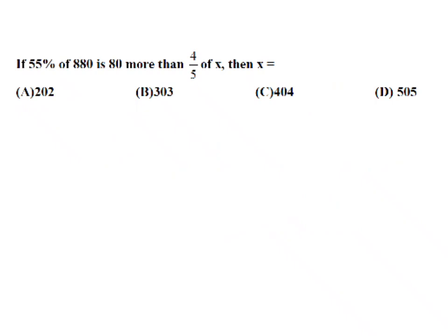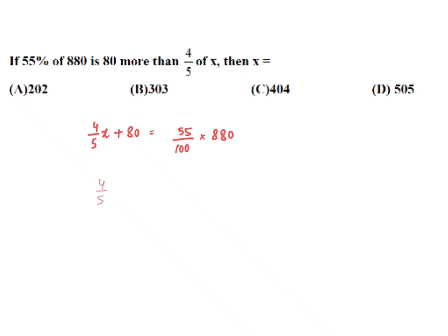55% of 880 is 80 more than 4/5th of x. So I can say 80 more than 4/5th of x is 4/5th of x plus 80, which equals 55% of 880. You can say 4/5th of x equals 80. 55% of 8 by 5th of x equals 80. If you take it as common, it will be 11 minus 1, 11 into 20 is up.